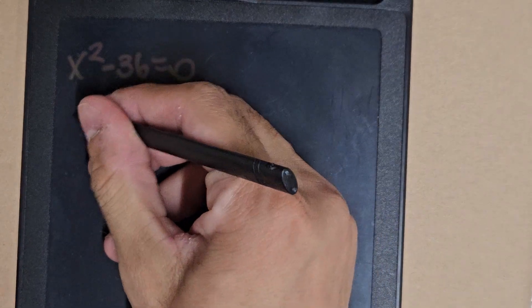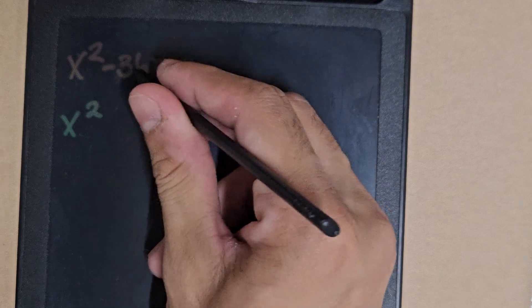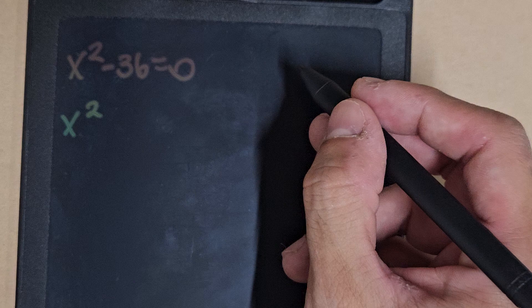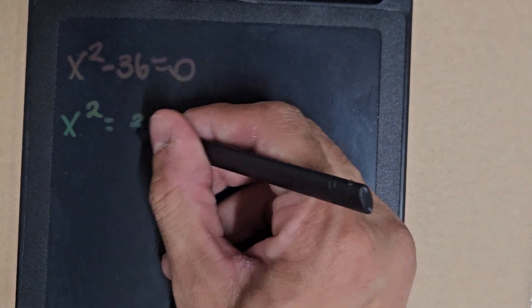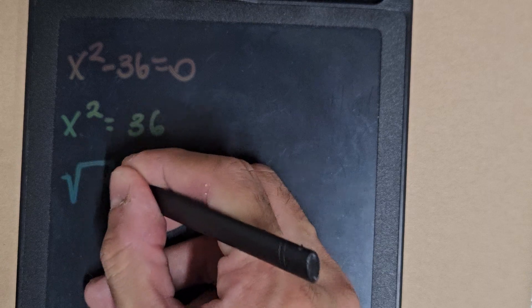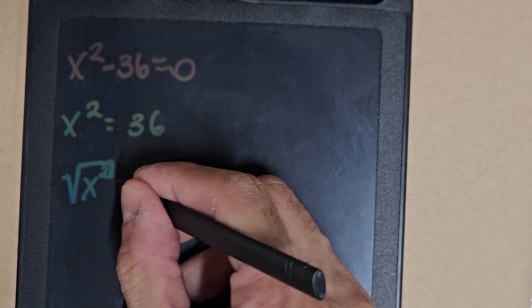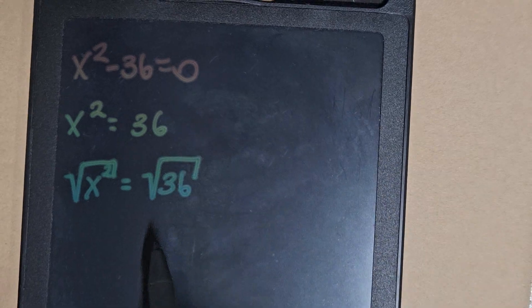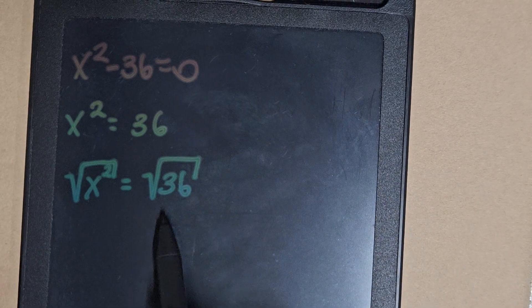Hi guys, welcome to my channel. Today we solve this equation. First, we have to pass the minus 36 to the other side as a positive number, so we take the square root of both sides. Attention, because...